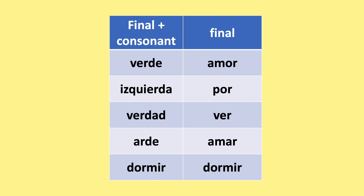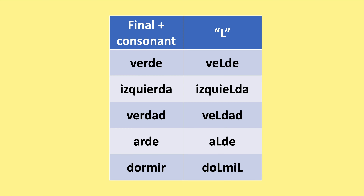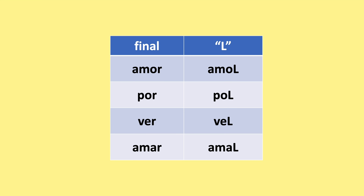The opposite also occurs: we saw how L changed into R, now we'll see how R changes into L. In the syllable-final consonant and final positions — such as in verde and amor — some dialects pronounce verde as 'velde', izquierda as 'izquielda', verdad as 'veldá', arde as 'alde', dormir as 'dolmil'. And in the final position: amor becomes 'amol', por becomes 'pol', ver becomes 'bel', amar becomes 'amal'.